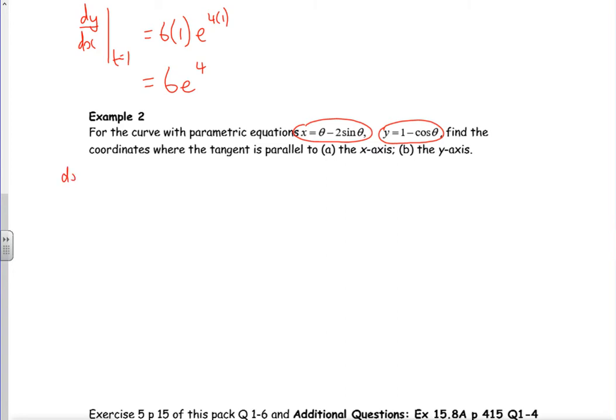So dx/dθ—remember sine goes to cos, cos goes to minus sine, goes to minus cos when differentiating. So dx/dθ is one, now minus sine goes to minus cos, so it's minus 2 cos θ. dy/dθ, the one disappears, minus cos goes to plus sine, so sine θ.